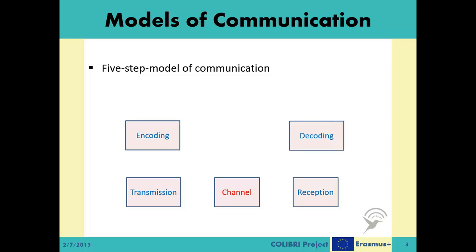To give these items some specific notations: W represents the actual message, X(T) represents the bit stream, and S(T) represents the signal. At the receiving end, S-bar(T) represents the received signal, Y(T) represents the received bit stream, and W-bar represents the decoded message. In the best case, we want W-bar to equal W, meaning the receiver has received the message correctly. Note that the intermediary items are given with the index T, which means these are streams over time.